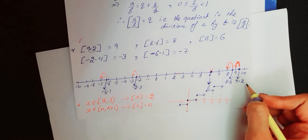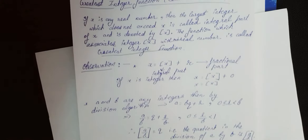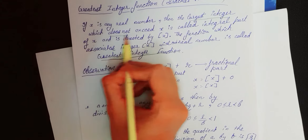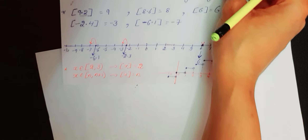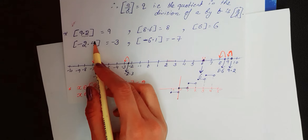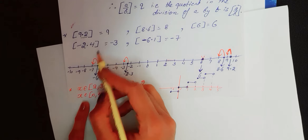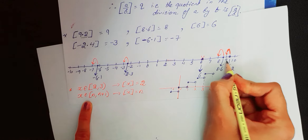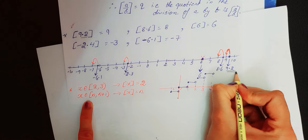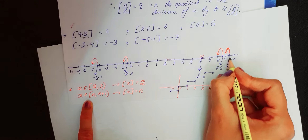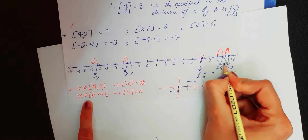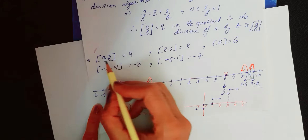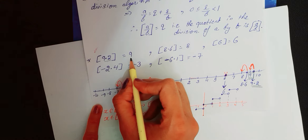Greatest integer function ki definition ke hisaab se — largest integer which does not exceed x. Toh agar humein ek real number 9.2 diya hua hai, toh uske liye largest integer which does not exceed 9.2 kya hoga? 9. It means jo bhi hamare paas real number x ho, uske left mein jo bhi largest integer hota hai, woh us real number x ka greatest integer function hota hai. Toh 9.2 ke liye greatest integer kya hai? 9 hai.